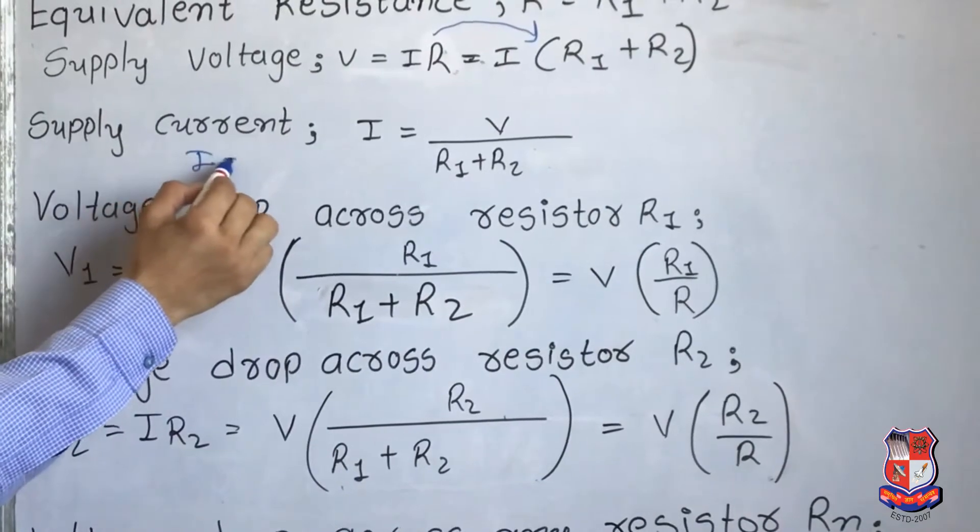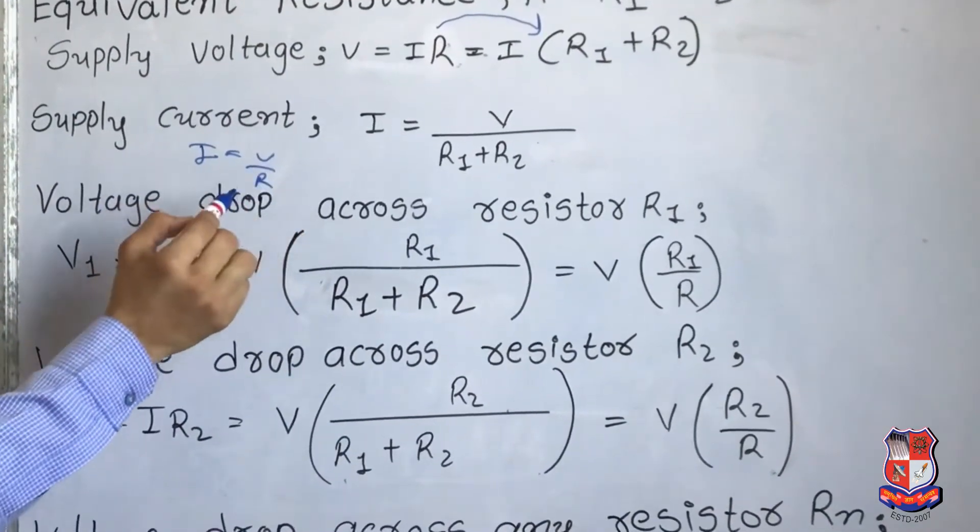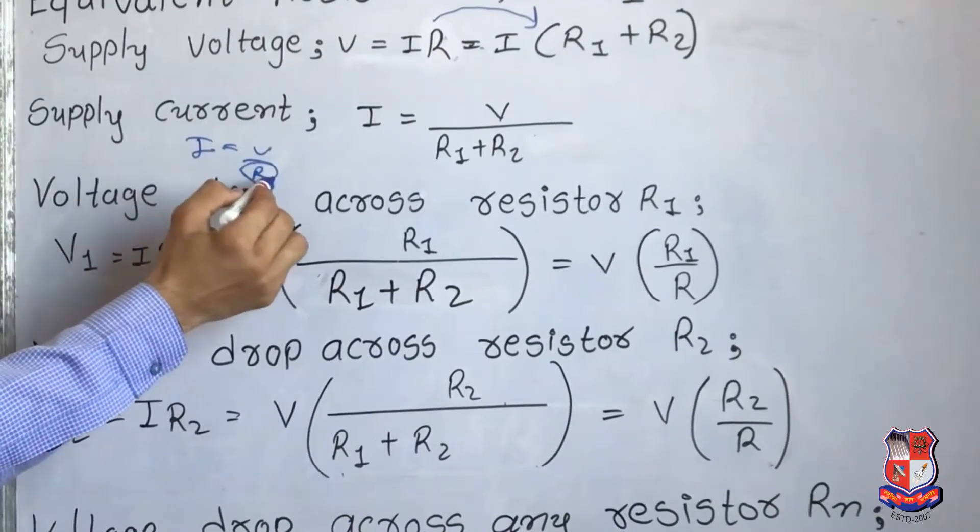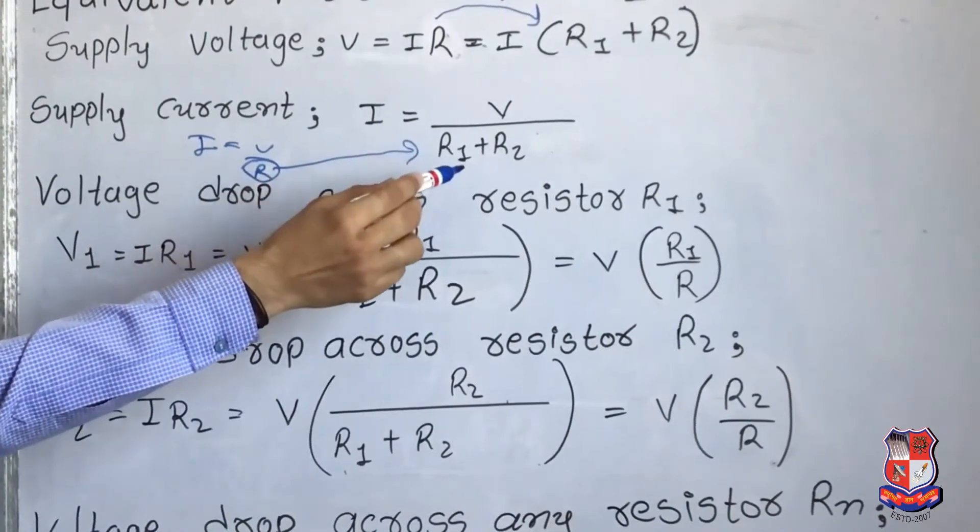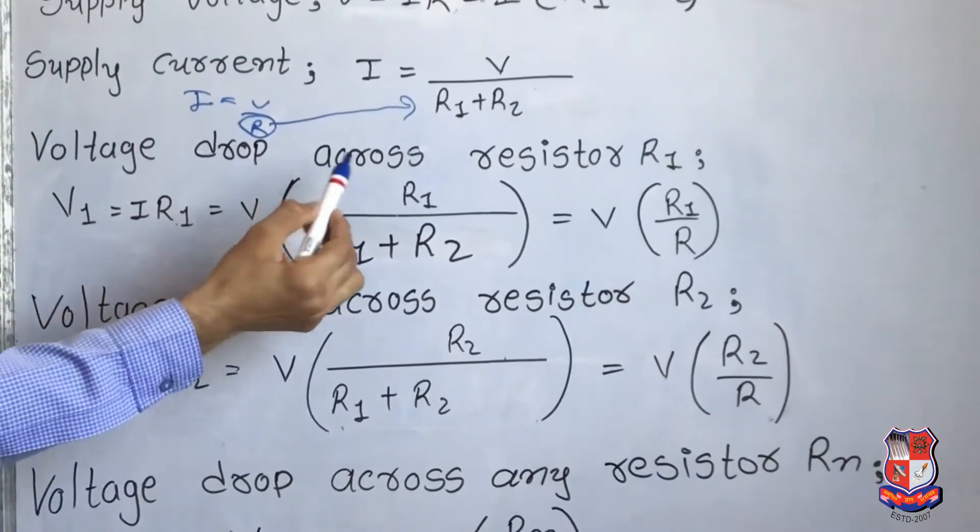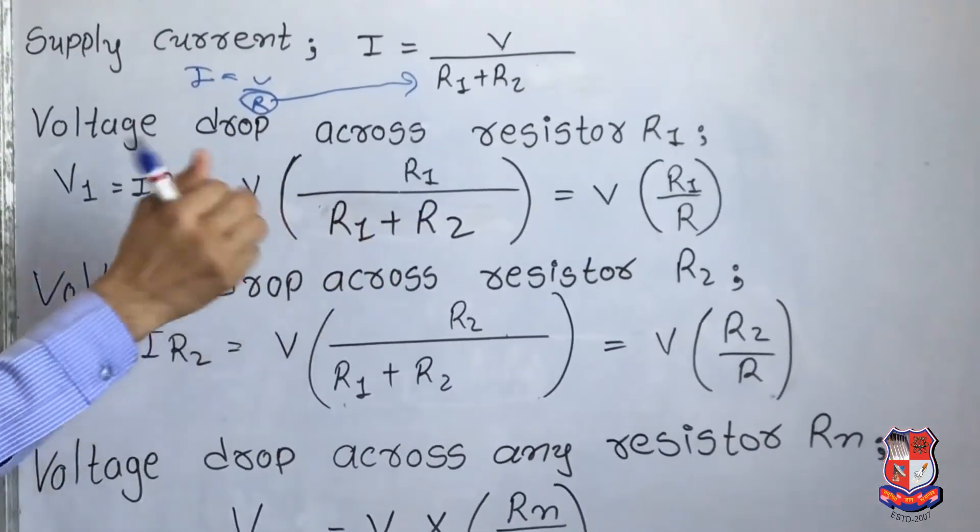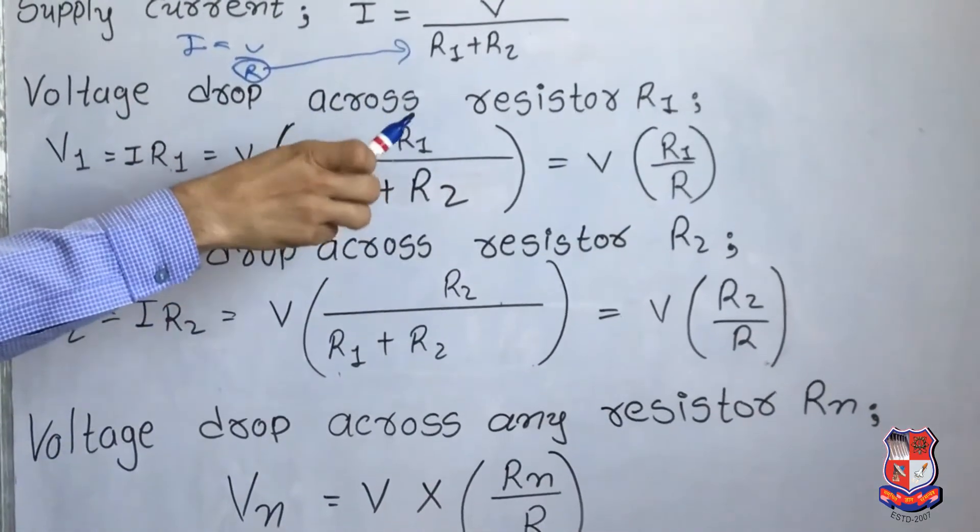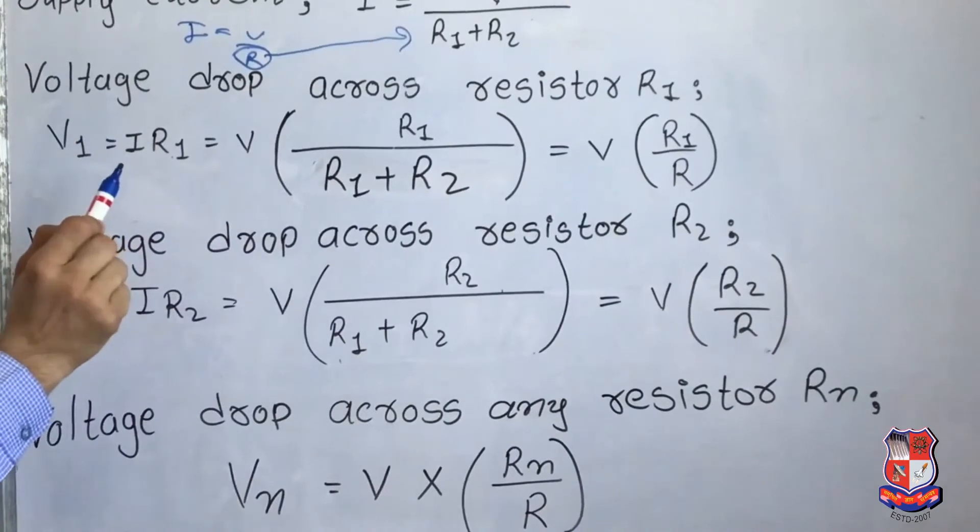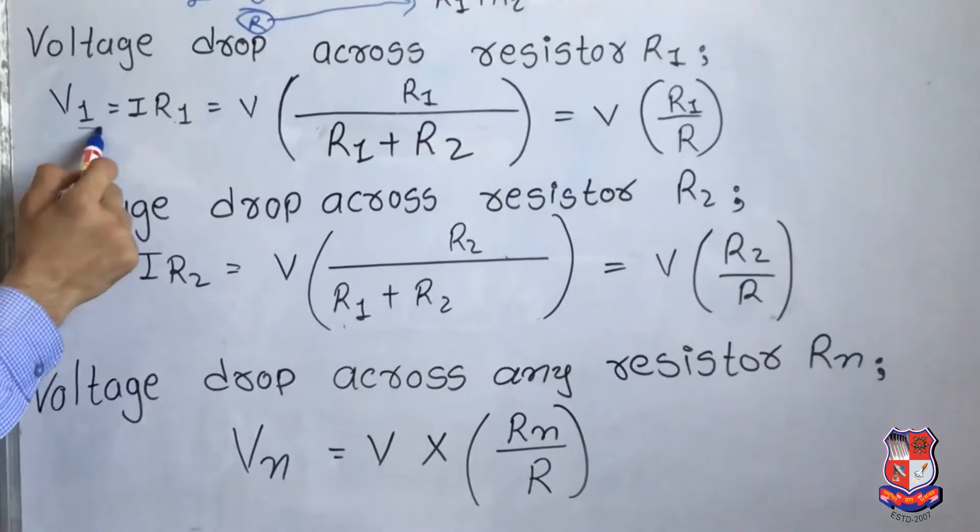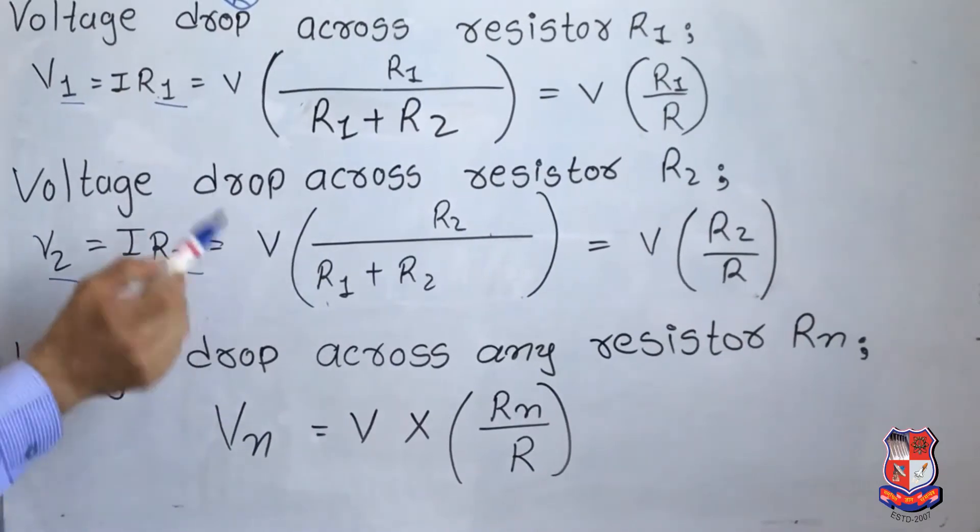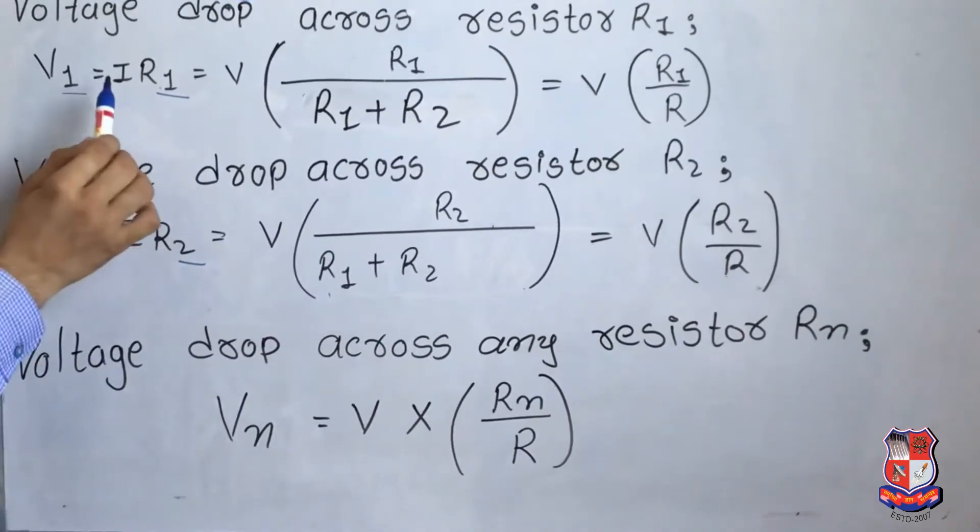As per Ohm's law, I is equal to V by R. Ohm's law tells us I is equal to V by R. So put the value of R. R's value is R1 plus R2. Now, voltage drop across resistor R1. Total resistance is 2. The first resistance is R1. How much voltage drop is across it? You have to find out here. So first is 1, second will be 2. V1 is equal to IR1 is equal to V, put the value of R1.